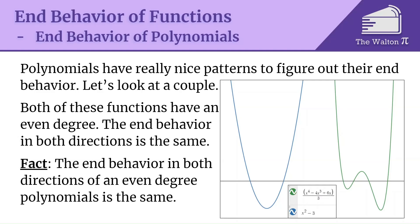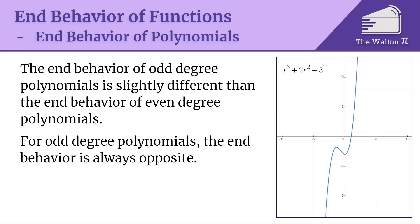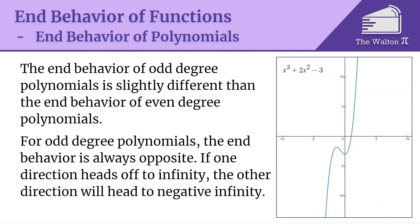The end behavior of odd-degree polynomials is different. Graphing x³ + 2x² − 3, in one direction it heads towards infinity and in the other it heads towards negative infinity. For odd-degree polynomials, the end behavior is always opposite: if one direction heads to infinity, the other heads to negative infinity, and vice versa.